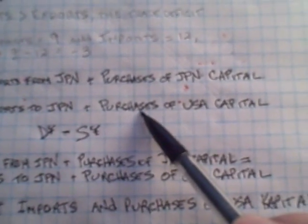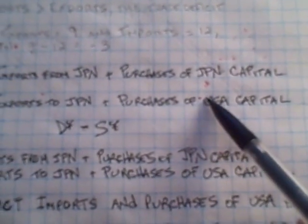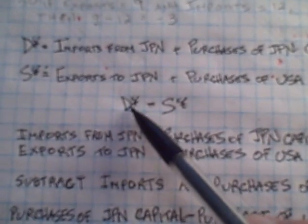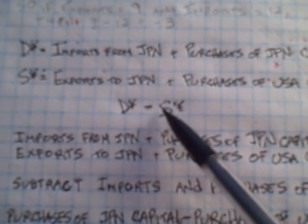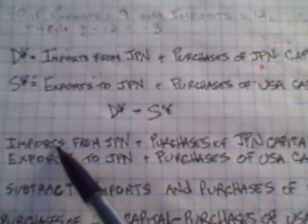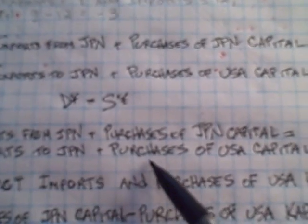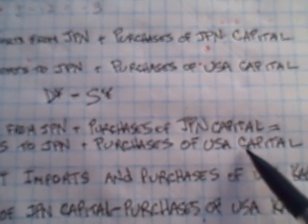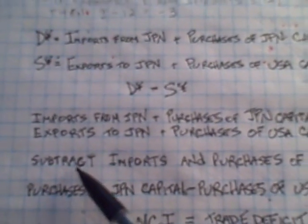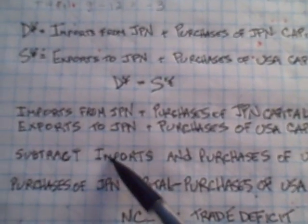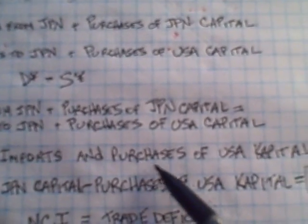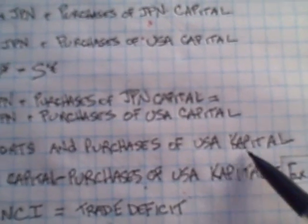Let's set demand equal to supply and rewrite the equation again. Imports from Japan plus the purchase of Japanese capital equals the exports to Japan plus the purchase of U.S. capital. I'm going to balance the equation by subtracting imports and purchases of U.S. capital from each side.